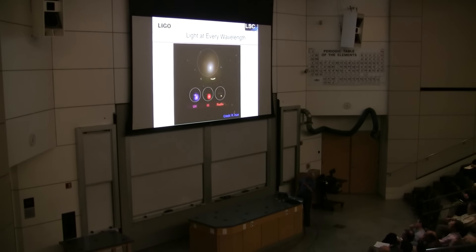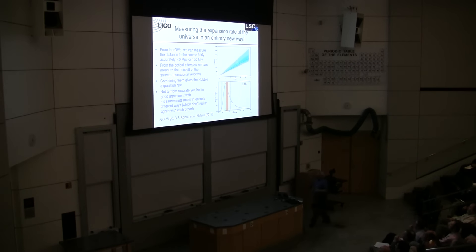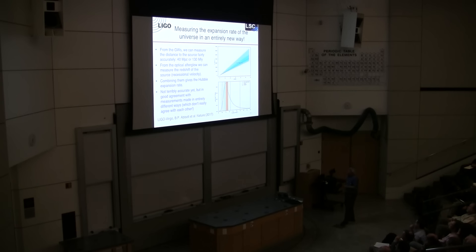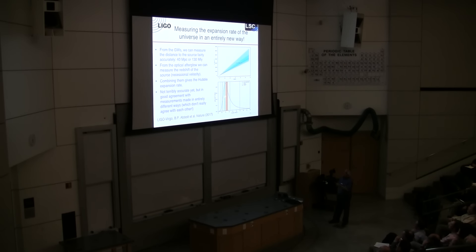That observation allowed us to identify the host galaxy. From the host galaxy we know the redshift, and from the gravitational waves we measured the distance at 40 megaparsecs. Now we can put it on a Hubble diagram. Here's the distance at 40 megaparsecs and here's the recessional velocity — it lies right on the line we expect for a constant Hubble parameter. Here is the posterior probability distribution for the Hubble parameter, ranging from 60 to 90. This band is the Hubble parameter from the Planck satellite from the cosmic microwave background, and this band is from nearby supernovae.